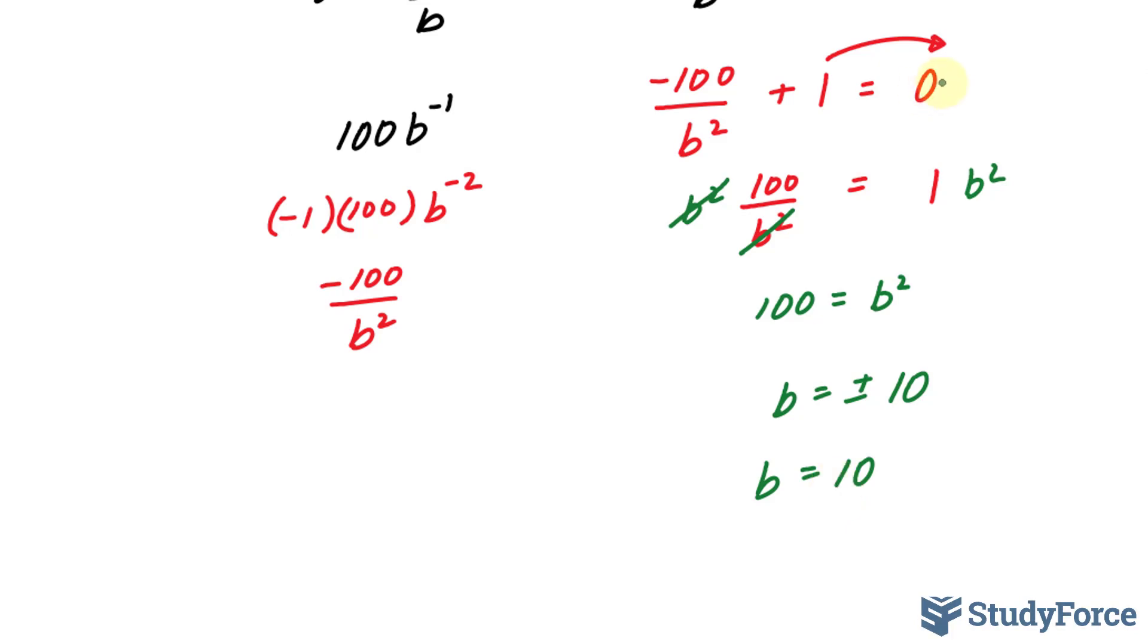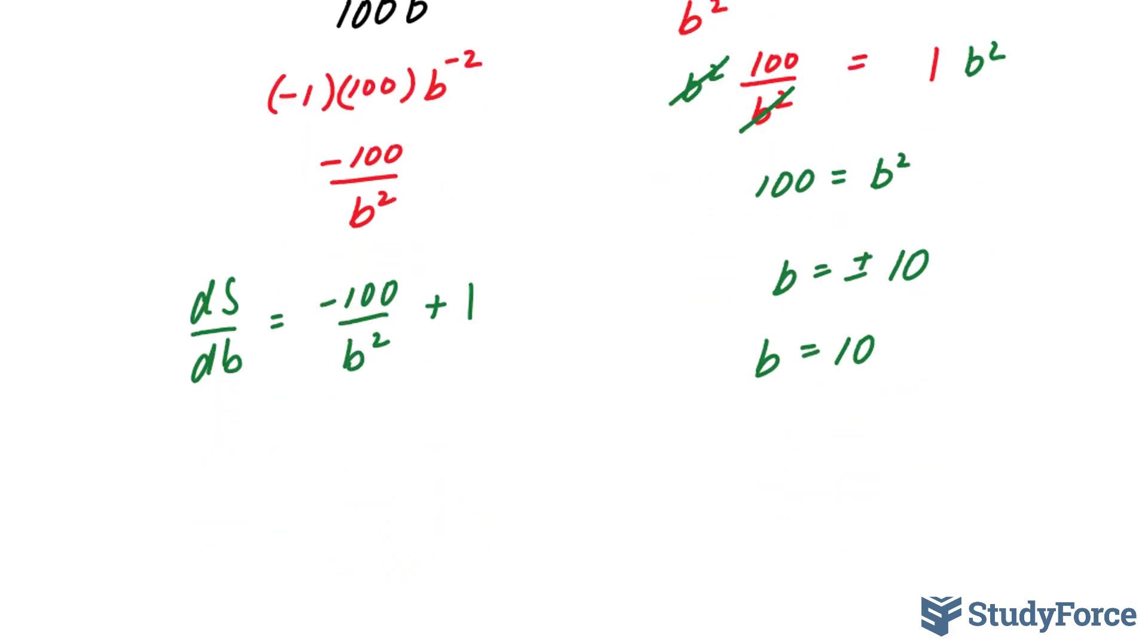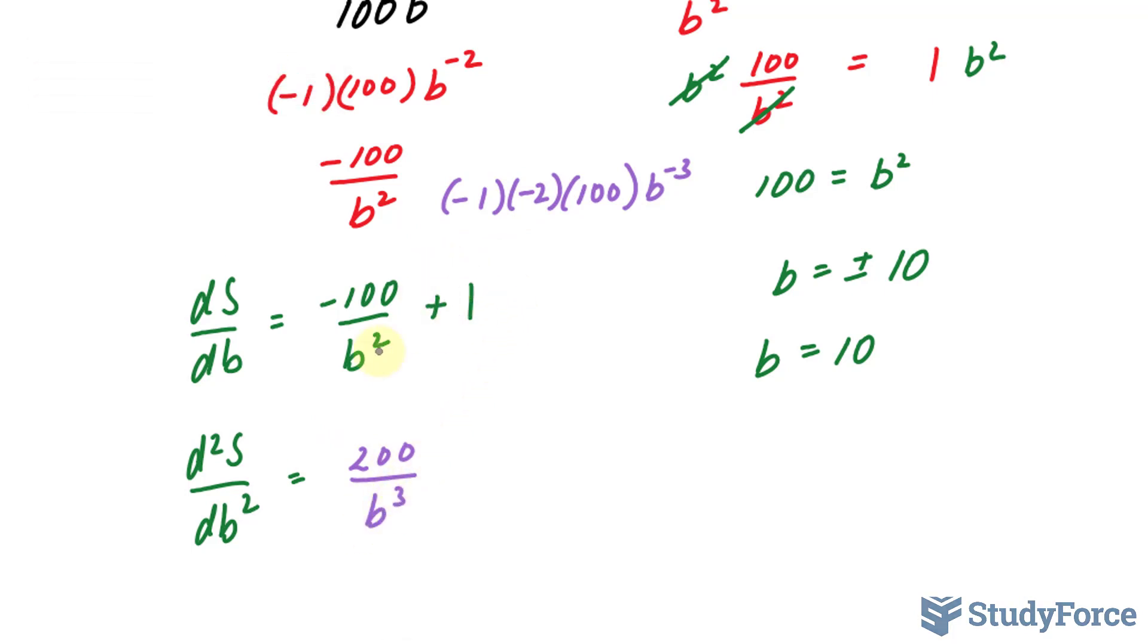So let's go ahead and find the second derivative of this function. dS over dB was equal to negative 100 over B squared plus 1. Taking the second derivative, this becomes d squared S over dB squared. Once again, we need to use the power rule. If I use the power rule I end up with negative 1 times negative 2 times 100 B to the power of negative 3. We can rewrite this so that it looks like negative times negative is positive, 200 over B to the power of 3.